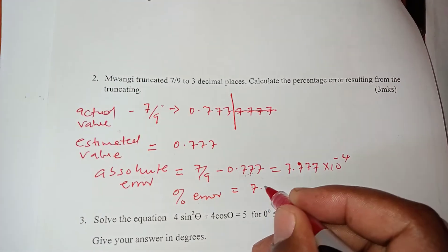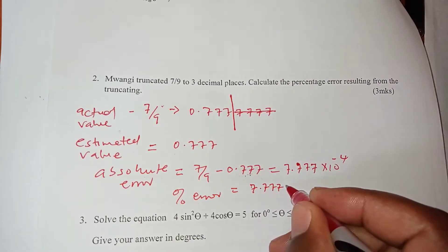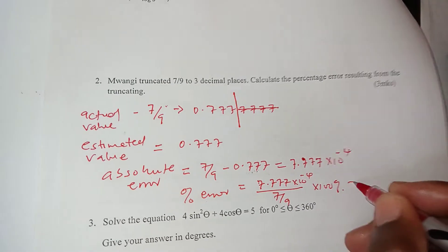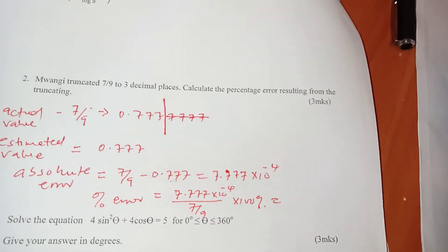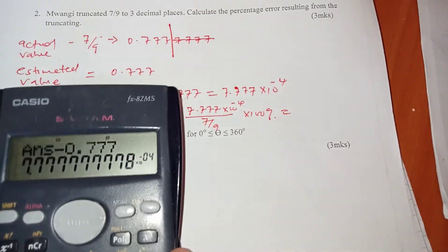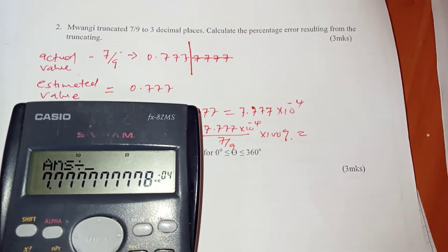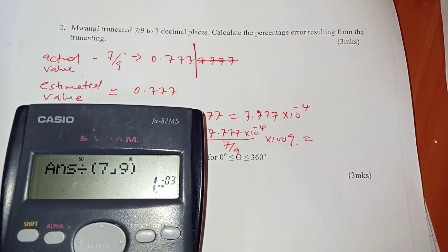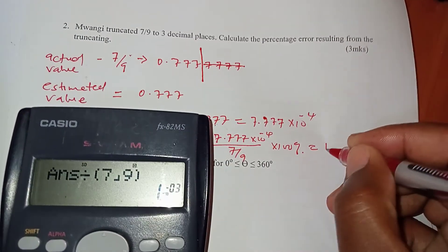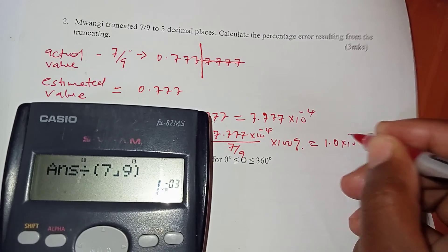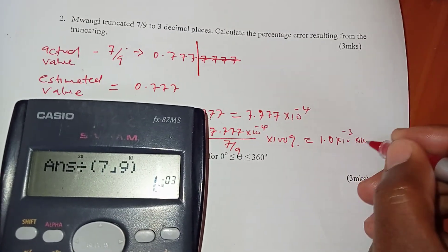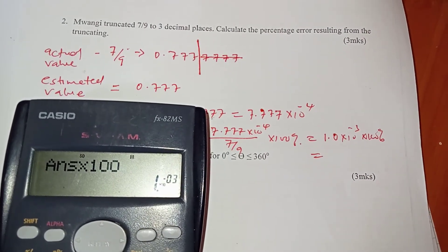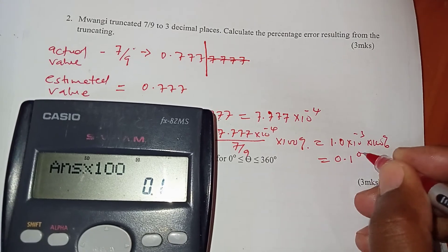I've ignored some numbers here because once I multiply by 100 I may not even get there. So then the percentage error for this will be this one divided by actual. So we have 7.77777 times 10 to power minus 4 divided by 7 over 9 times 100 percent. It's getting messy here but I'm very sure you're getting to understand what we're doing. So you take that the way it is, divide by 7 over 9, and we have 1.0 times 10 to power minus 3 before we multiply by 100.